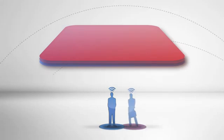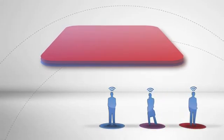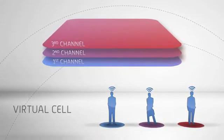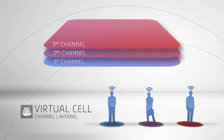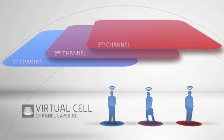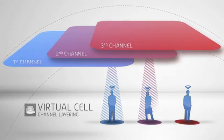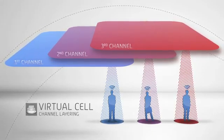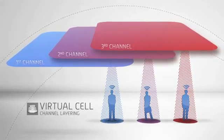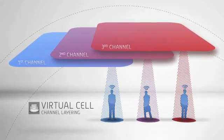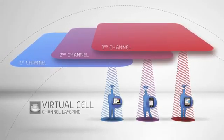Meru's single channel coverage doesn't mean only one channel can be used. Meru allows virtual cells using different channels to co-exist in the same space. We call this channel layering. Like stacked Ethernet switches in a wired network closet, each new channel layer adds as much capacity as the first, providing the best RF capacity in the industry. Channels can also be added to provide fail-safe coverage or to isolate certain device types or applications.